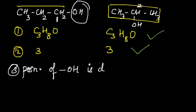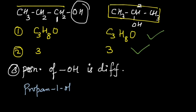Therefore these two compounds are position isomers. Their names make this very clear: the first compound is propan-1-ol and the second compound is propan-2-ol. The position of the functional group is different in both compounds, and therefore they are position isomers.